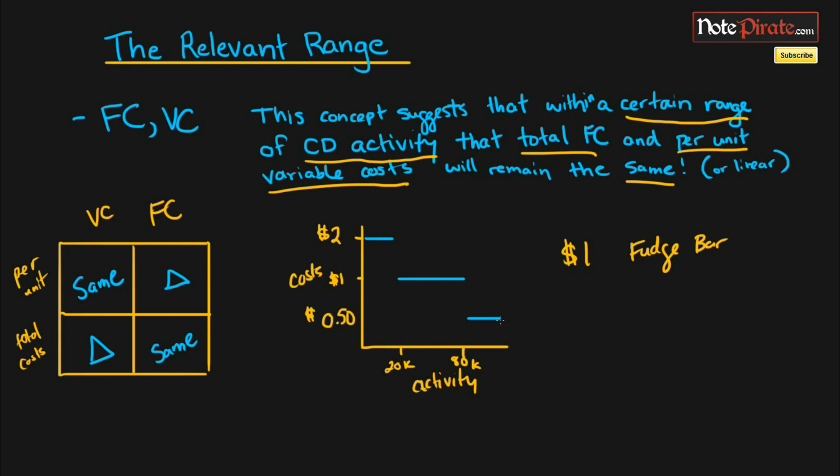So outside of the relevant range it changes and if we sold more than 80,000 we'd probably get a discount. Let's say it would bring our variable cost down to $0.50 a bar. So it would get that bulk discount and the variable cost per unit would change. So once again within the relevant range our variable cost per unit will stay the same and it will change outside of the relevant range.